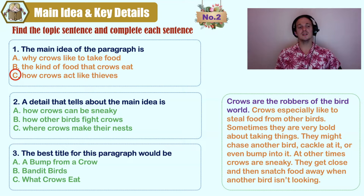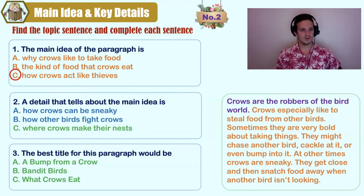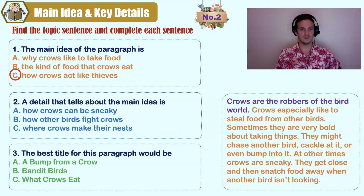A detail that tells about the main idea: A) how crows can be sneaky, B) how other birds fight crows, C) where crows make their nests. Only one of these details is answered in the paragraph. It's A — how crows can be sneaky by stealing from other birds.